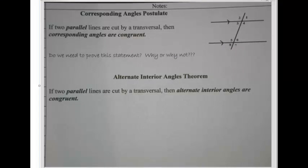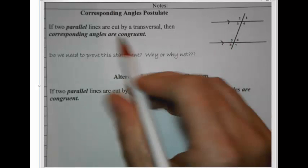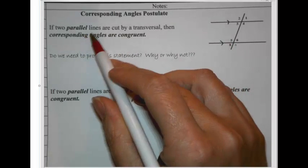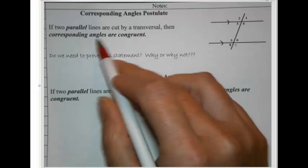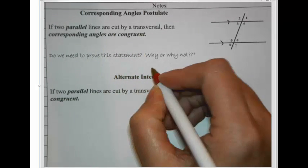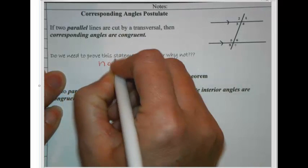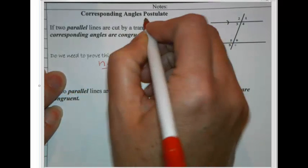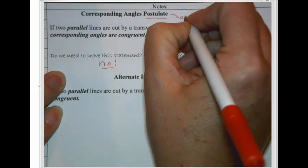In this lesson, we're going to look at how do we know that these postulates and theorems are really true. The corresponding angles postulate — we saw in the last lesson a demonstration that it was the same. But how do we know? Do we need to prove that if two parallel lines are cut by a transversal, then the corresponding angles are congruent? The answer is we actually don't, because we're calling it a postulate, and postulates are just accepted as true.